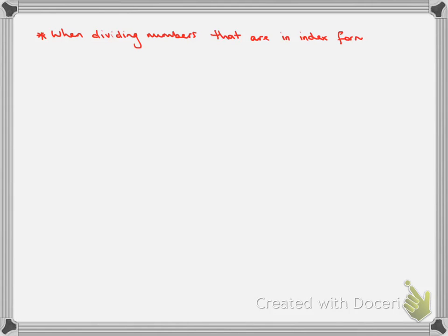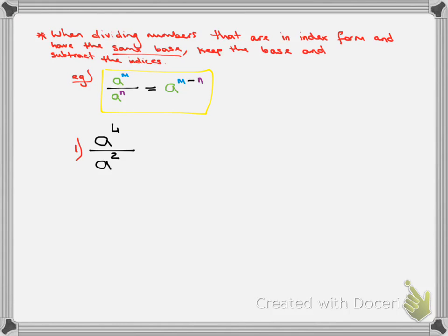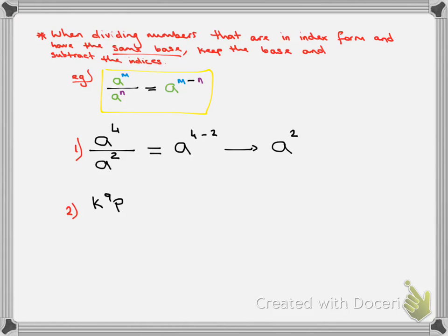Next, when dividing numbers in index form that have the same base, we keep the base and this time subtract the indices. So a to the power of m divided by a to the power of n gives a to the power of m minus n. For example, a to the power of 4 divided by a to the power of 2: we subtract the powers, 4 minus 2, and keep the same base, giving us a to the power of 2.